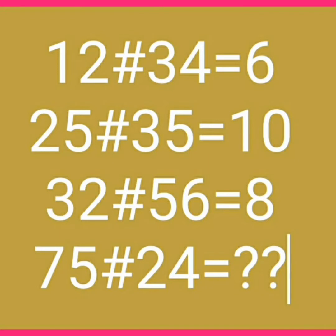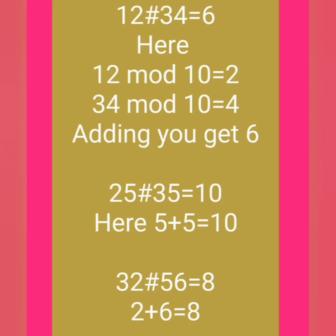Consider this puzzle: 12 ash 34 is equal to 6, 25 ash 35 is equal to 10, 32 ash 56 is equal to 8. Then what is the value of 75 ash 24? We have a set of numbers with the operation 'ash'. Once we know the pattern of this operation, we can very easily find out the solution.